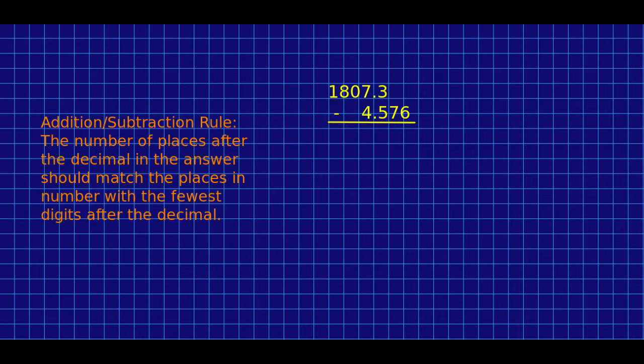The addition and subtraction rule is the one where I find students tend to get more confused. So it says that the number of places after the decimal in the answer should match the places in the number with the fewest digits after the decimal. Now notice, we're no longer talking about significant figures. We're talking about places after the decimal. So let's do one. And we can justify it.